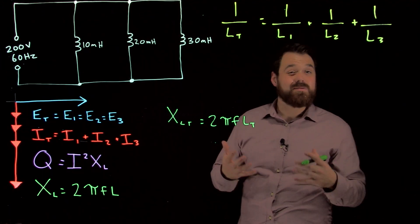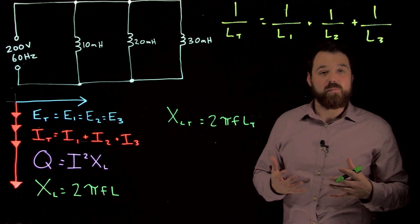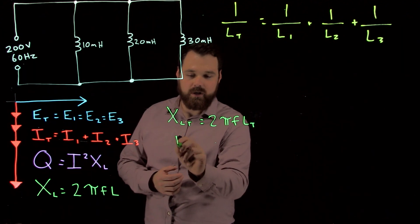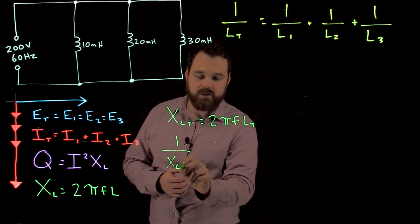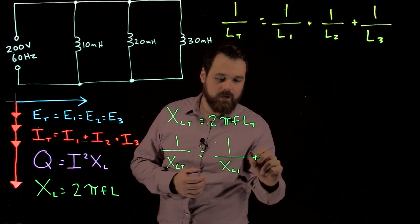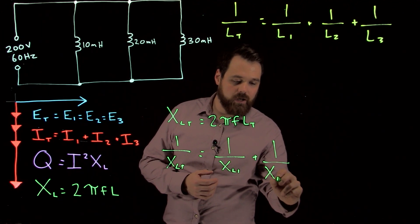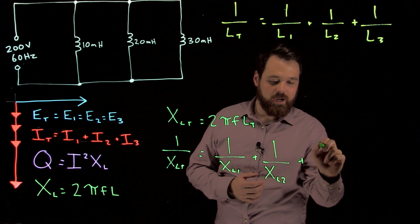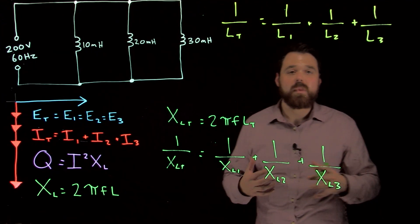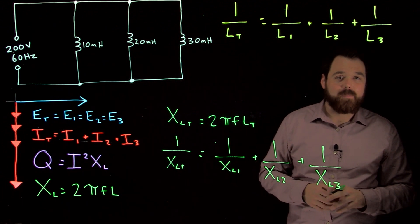Another way is we know our inductive reactance is ohms, and ohms in parallel add up inversely. So we can also go 1 over XLT equals 1 over XL1 plus 1 over XL2 plus 1 over XL3. Either of those ways should come up with the same answer.